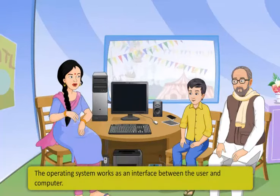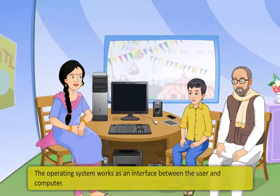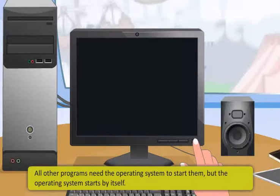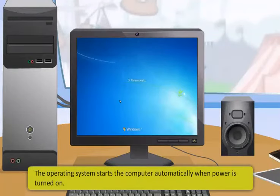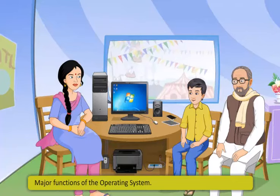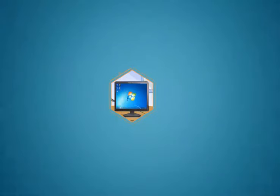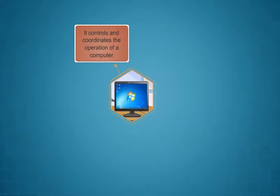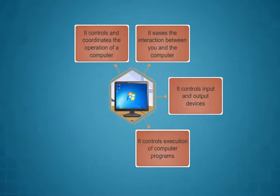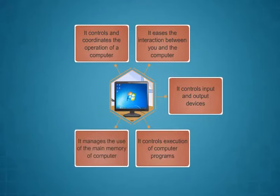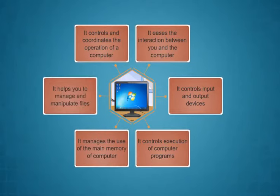The operating system works as an interface between the user and the computer. All other programs need an operating system to start them, but the operating system starts by itself. The operating system starts the computer automatically when power is turned on. The major functions of the operating system are: it controls and coordinates the operation of a computer, it eases the interaction between you and the computer, it controls input and output devices, it controls execution of computer programs, it manages the use of the main memory of the computer, and it helps you manage and manipulate files.